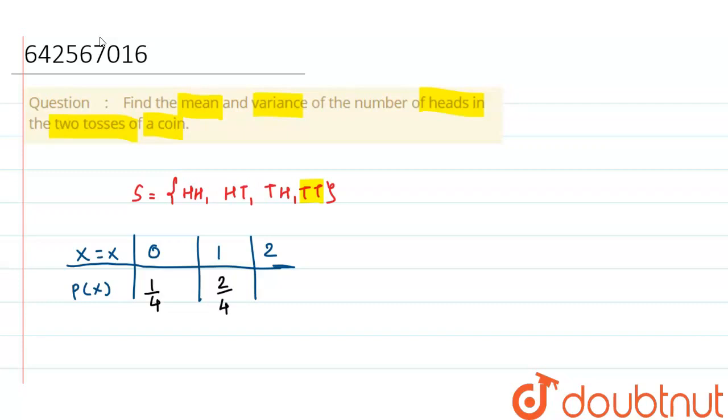So, it will be probability is 2 by 4. And this has probability 1 by 4. Getting 2 times heads. This is the probability of getting 2 times heads.